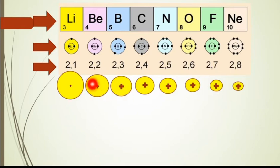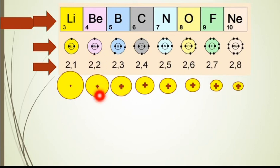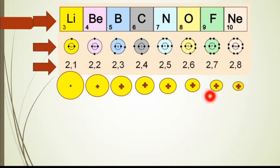इससे यह होगा कि center में जब positive charge increase होगा, तो इसके बाहर जो shells हैं - shells में electrons होते हैं और electrons में minus charge होता है। और हमेशा two opposite charges में attraction होती है, plus और minus में। तो क्योंकि electrons में minus charge है और center में nucleus पे plus charge है, तो lithium में center में nucleus का charge बिल्कुल small है, इसलिए इसका जो बाहर second shell में electron present है, वो nucleus से दूर होता है। लेकिन जैसे center में nucleus का charge बढ़ रहा है, यह second shell के electrons को अपनी तरफ attract कर लेता है, जैसे इसका size थोड़ा सा कम हो गया।